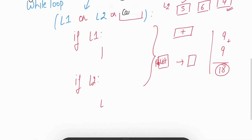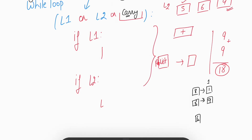We also need carry in our while loop condition. Suppose we have nodes 8 and 8, then 1 and 9. Adding 8+8 gives 16: we store 6 and carry = 1. Then 1+9+1(carry) = 11: we store 1 and carry = 1 again. Once both lists are exhausted, carry still holds a value of 1 that needs to be stored. So we run the loop until carry is also zero — the while condition becomes: L1 or L2 or carry.